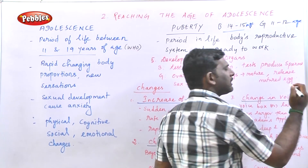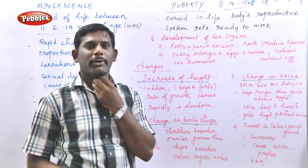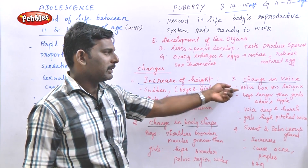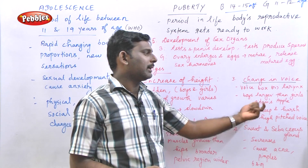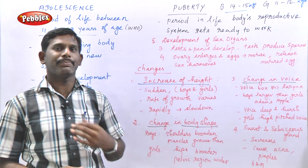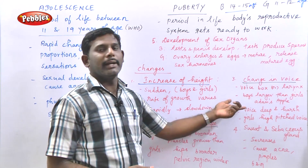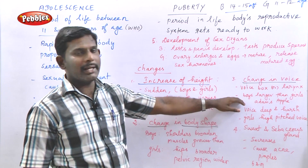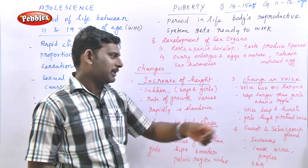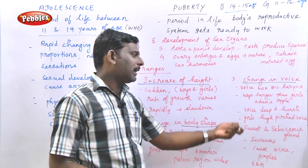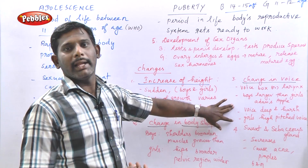Next, there is a change in voice. Boys have a larynx or voice box that is larger than girls'. During the puberty period, the voice box enlarges in boys and can be seen as an Adam's apple. That is why boys' voices become deep and harsh during the puberty period. Girls experience a high-pitched voice change. The next change is an increase in sweat glands and sebaceous glands. Sebaceous glands are oil glands, and both sweating and oil gland function increase when boys and girls attain puberty.